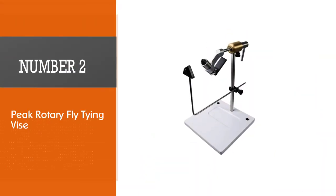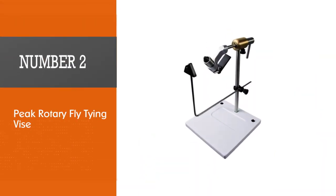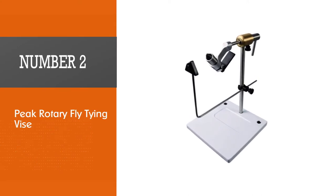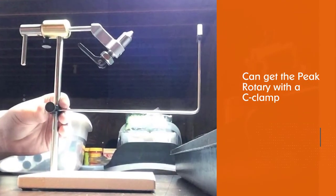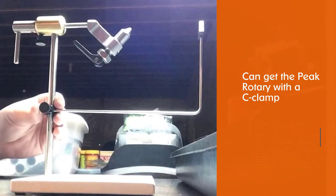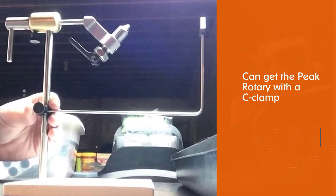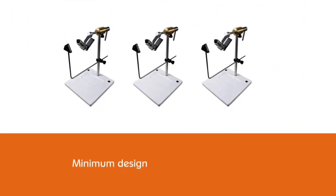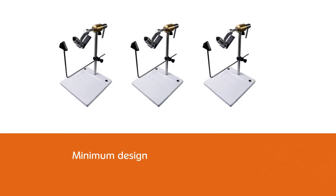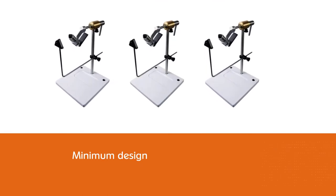Number two: Peak Rotary fly tying vice. The Peak Rotary vice is another great fly vice for the money. It is a great choice for fly tiers that are a little more advanced already. You can get the Peak Rotary with a C-clamp or a pedestal base. The Peak Rotary vice features a minimal design to focus on what's essential.